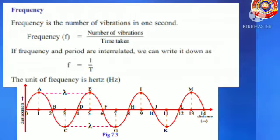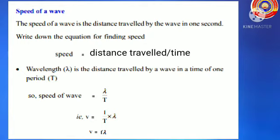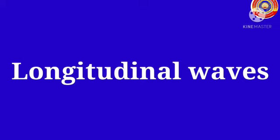Next: speed of a wave. The speed of a wave is the distance traveled by the wave in one second — speed equals distance traveled divided by time. Wavelength is the distance traveled by a wave in a time of one period, so speed of a wave equals lambda divided by T. That is V equals (1/T) × lambda. Therefore V equals F × lambda. That is, the speed or velocity of a wave equals F times lambda.